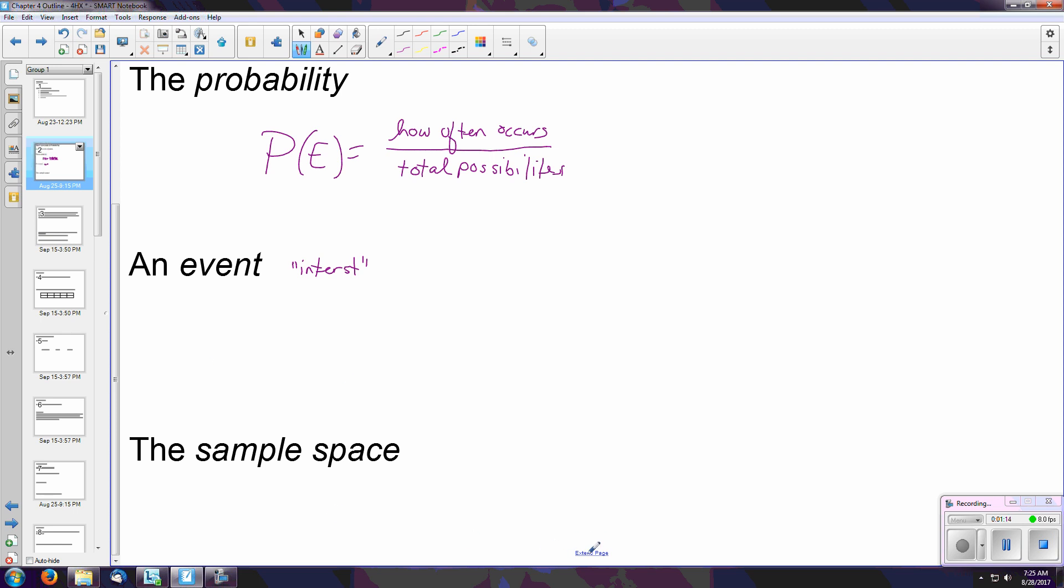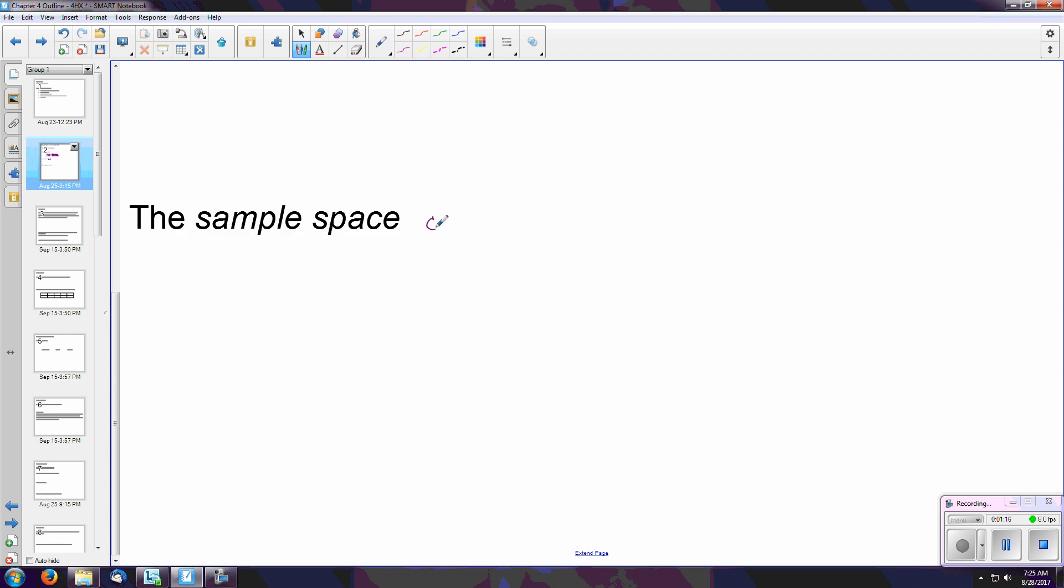Our sample space is a comprehensive list of every single event that could potentially happen. Now, one thing to keep in mind is events, there might be compounded amounts of those. So it could take on separate things. The sample space is a comprehensive list of all outcomes, whether they are likely to occur or not.